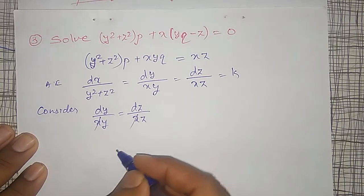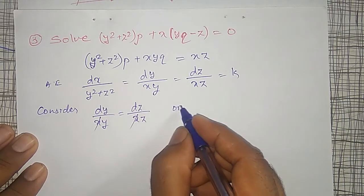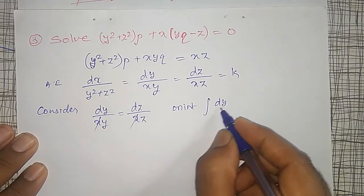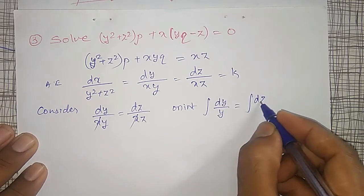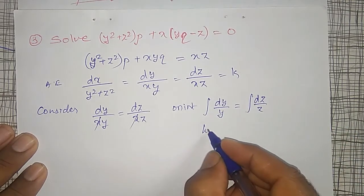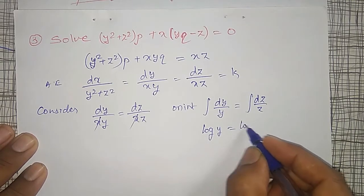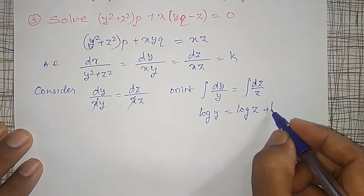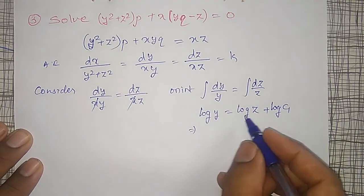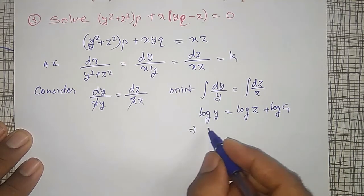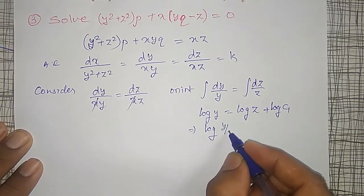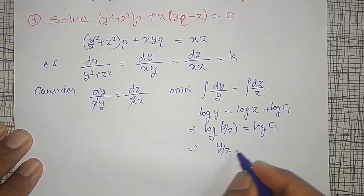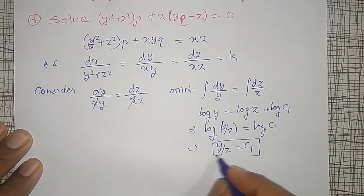Consider dy/(xy) = dz/(xz). The x's cancel on both sides. On integration, ∫dy/y = ∫dz/z, giving log y = log z + log c₁. Shifting log z to the other side: log(y/z) = log c₁, therefore y/z = c₁ is the first solution.